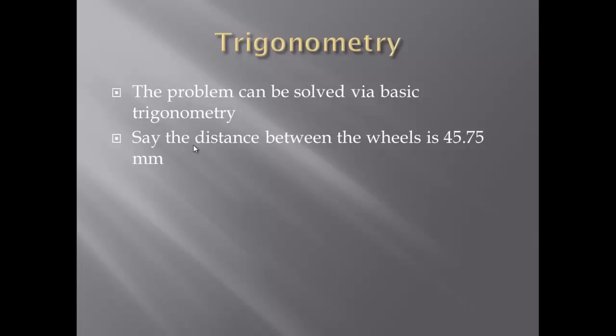So this problem can be solved pretty easily using basic trigonometry. Basically what we need to do is we have the wheel circumference and we have the distance between the two wheels which you also need to measure. So in my case it's 45.75 mm.